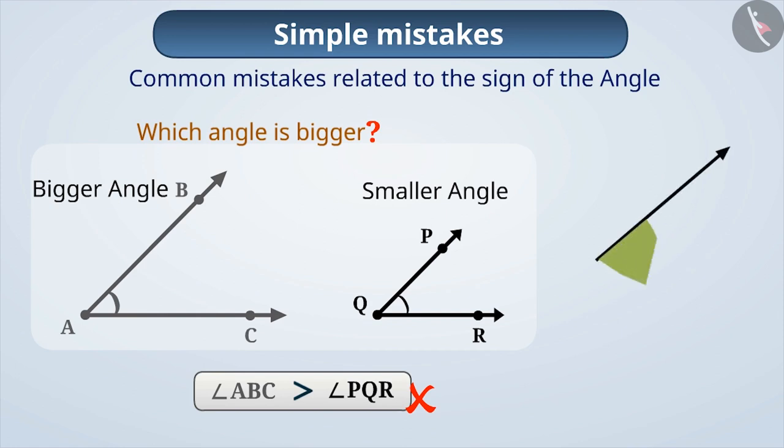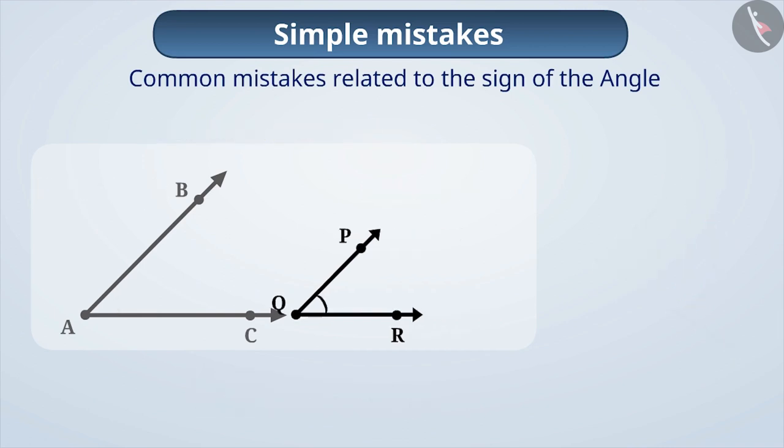Angle is a measure of rotation of a ray or line segment. Or, we can say that the angle shows the inclination of two rays from each other. If we arrange the given figures on each other,